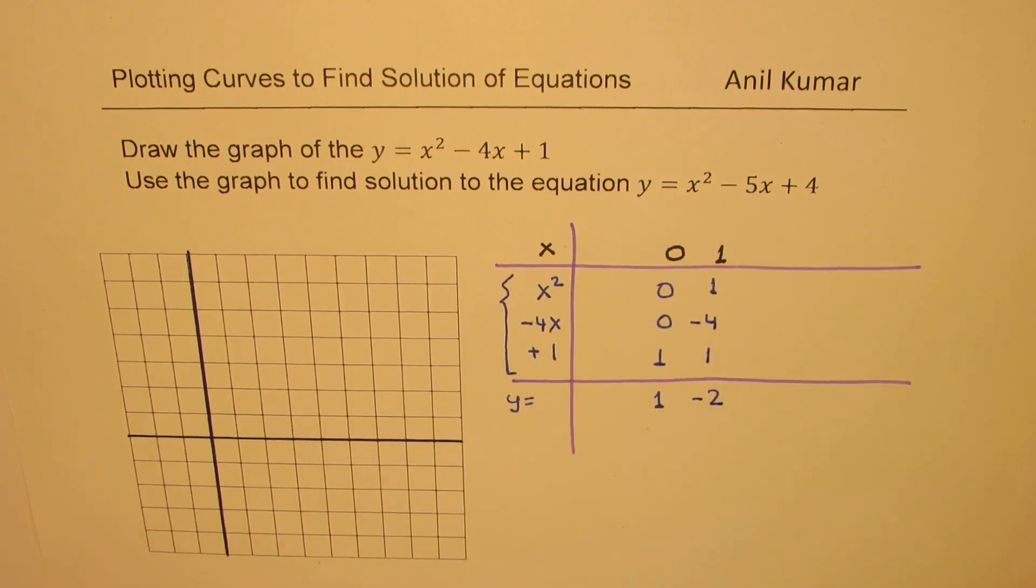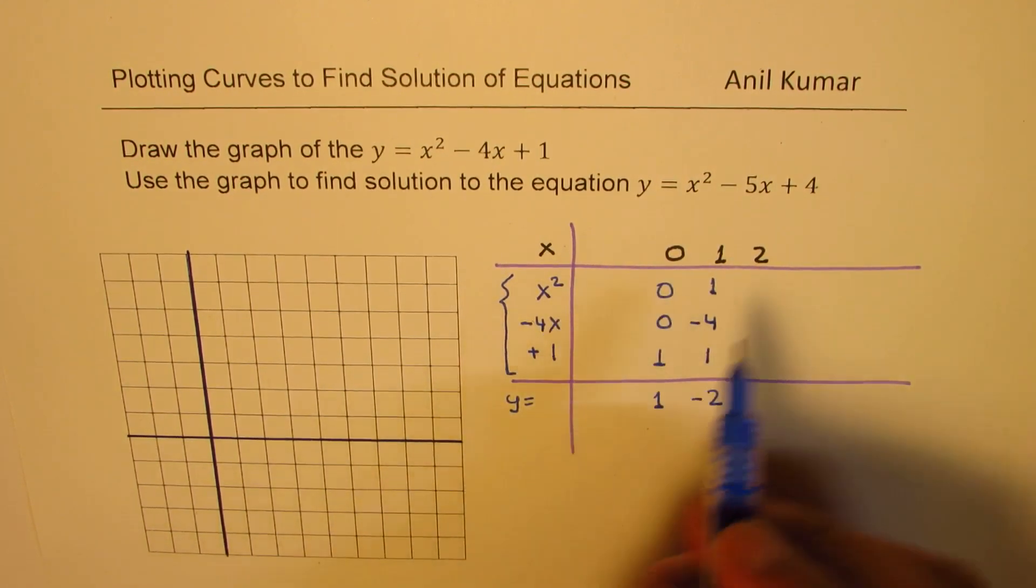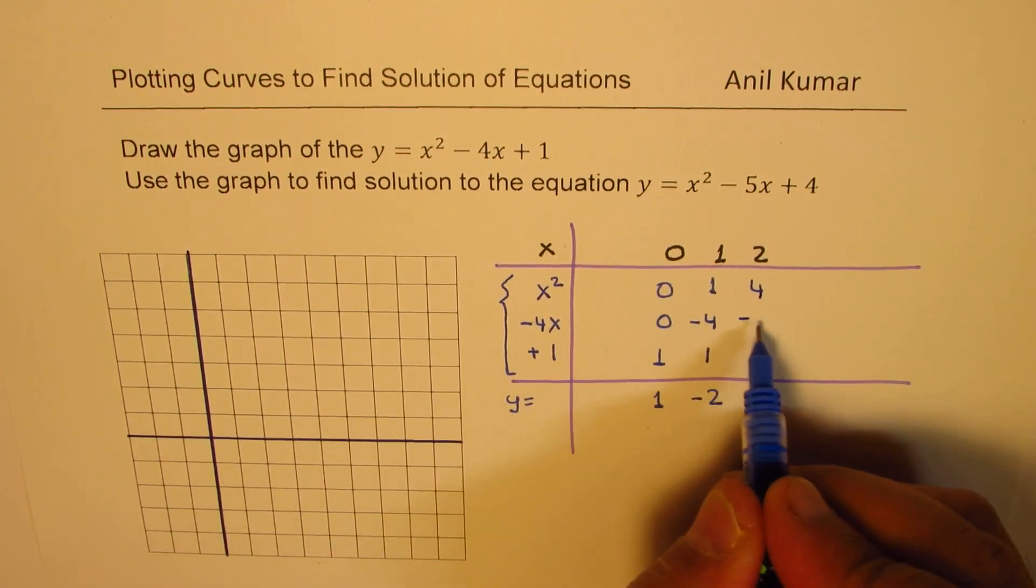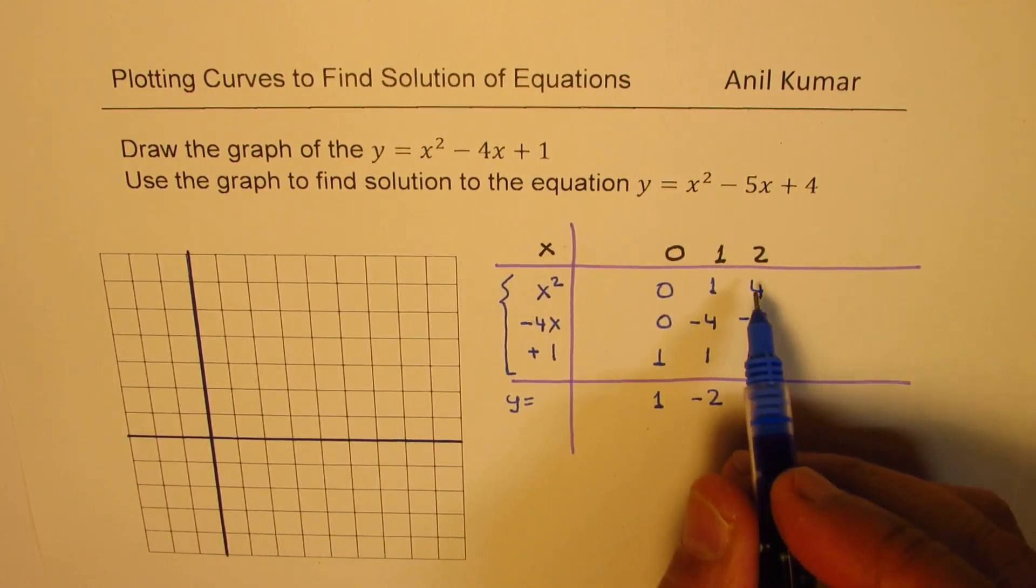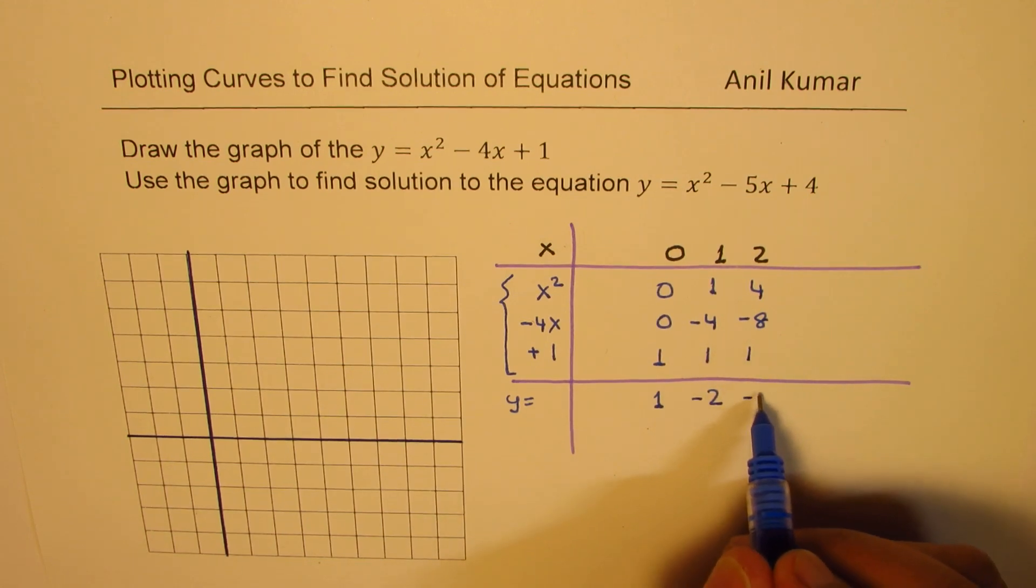For x equals 2 we get a point which is here: it is 4, then minus 8, and plus 1. So that gives you minus 4 plus 1 as minus 3.